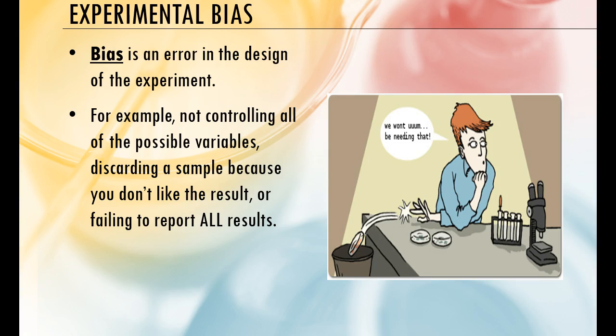Let's talk about bias for a minute. Bias is an error in the design of the experiment, and there are three types. Personal bias is just how you personally feel about something or someone — it gets in the way a lot with observational studies. Cultural bias depends on the culture we grow up in and can also affect observational studies. The last type, and the one we'll run into most often in the lab, is experimental bias — that's where you design the experiment wrong. This is where we get conflicting reports, like one day coffee is good for adults and the next day it's bad, because the scientists may have designed their study incorrectly, giving really bad data.